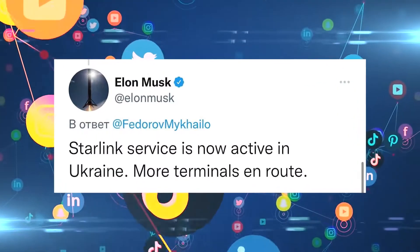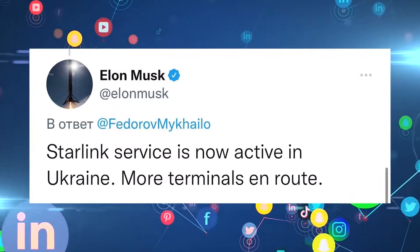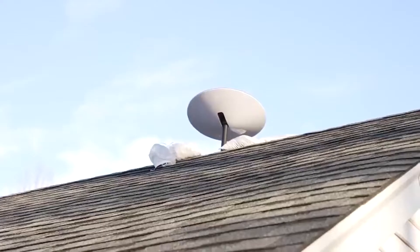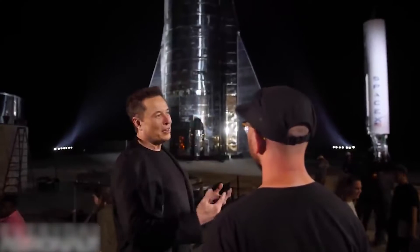Musk promptly obliged and tweeted in response, Starlink service is now active in Ukraine, more terminals on route. Soon after, in March, Musk claimed that Russia had jammed Starlink terminals in the country at a time, following which he also said that after a software update, Starlink was operating normally.